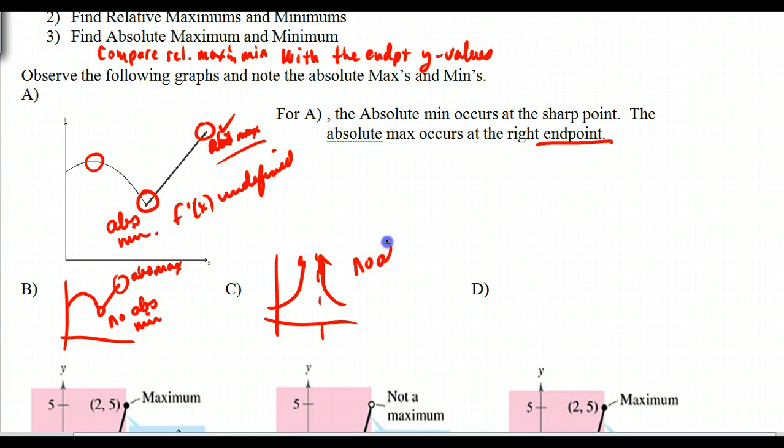So this one would have no absolute max. It might have an absolute minimum depending upon how these behave, but if this just approaches the axis here, it won't have an absolute minimum either because any value I find, I can find one lower. So you can never lock it in.